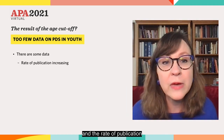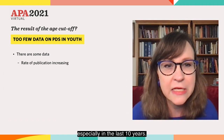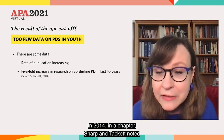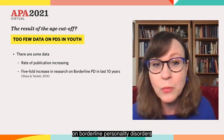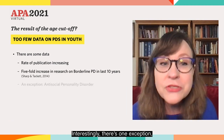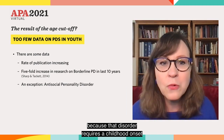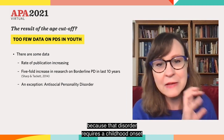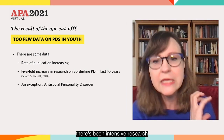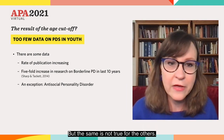Now, there are some data, and the rate of publication has been increasing dramatically, especially in the last 10 years. In 2014, Sharp and Tackett noted that there had been a five-fold increase in research on borderline personality disorders in the 10 years before that. Interestingly, there's one exception, which is antisocial personality disorder, because that disorder requires a childhood onset and manifestation, so there's been intensive research into the developmental pathways leading to that disorder. But the same is not true for the others.